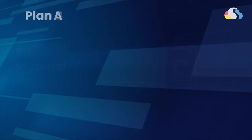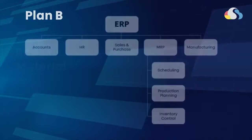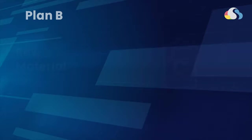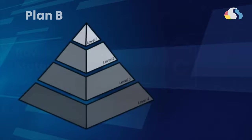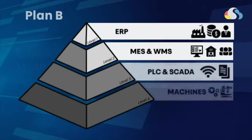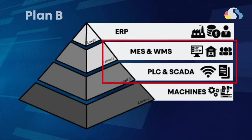Option B is to forget about the entire ERP system and just focus on MRP — Material Resource Planning. Instead of doing the whole system, we narrow down to the two areas that they need. This will allow them to collect data, and it's pretty normal and useful.